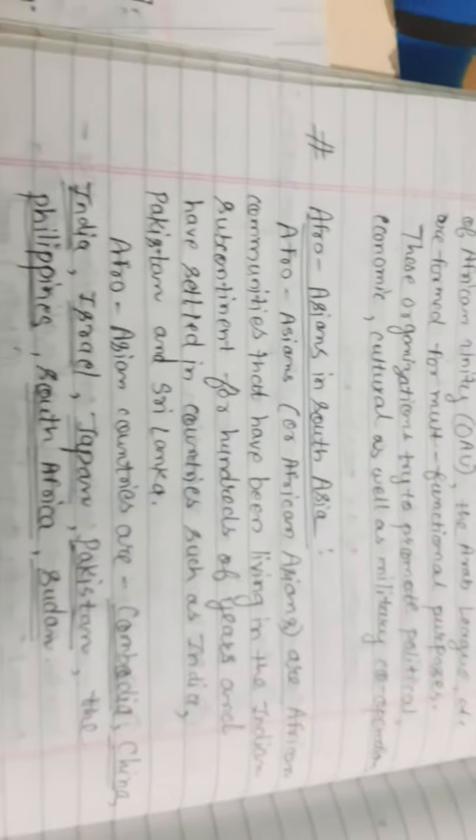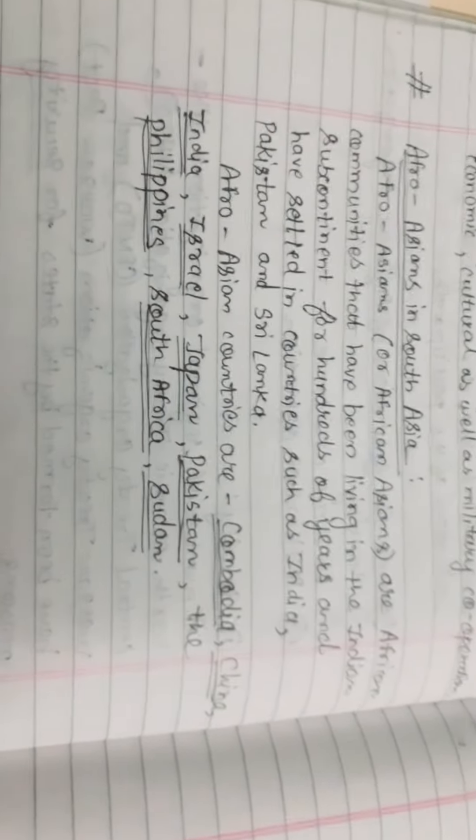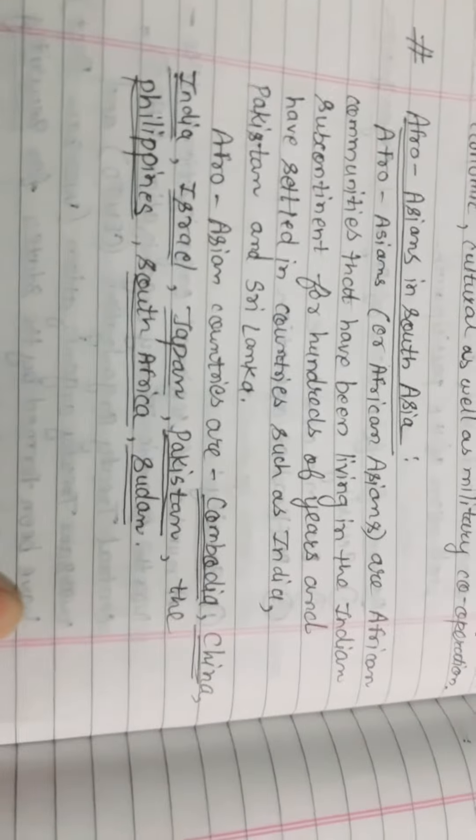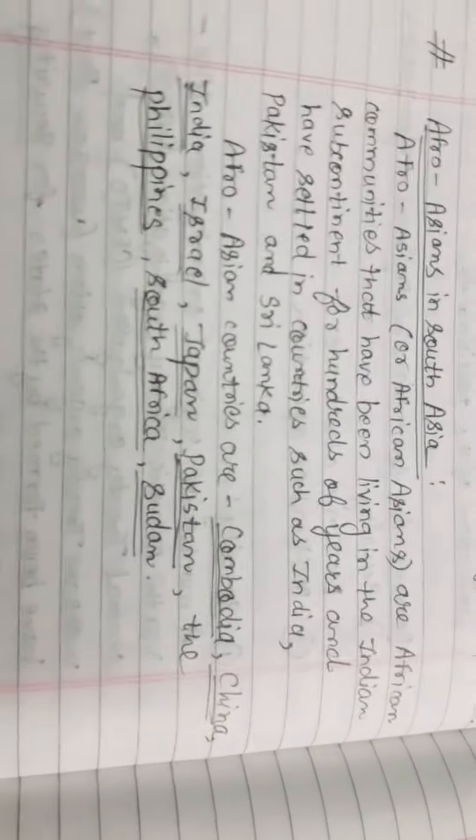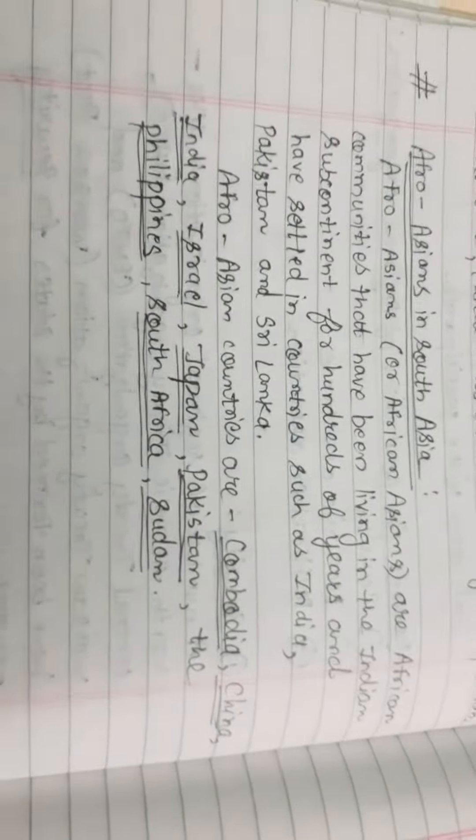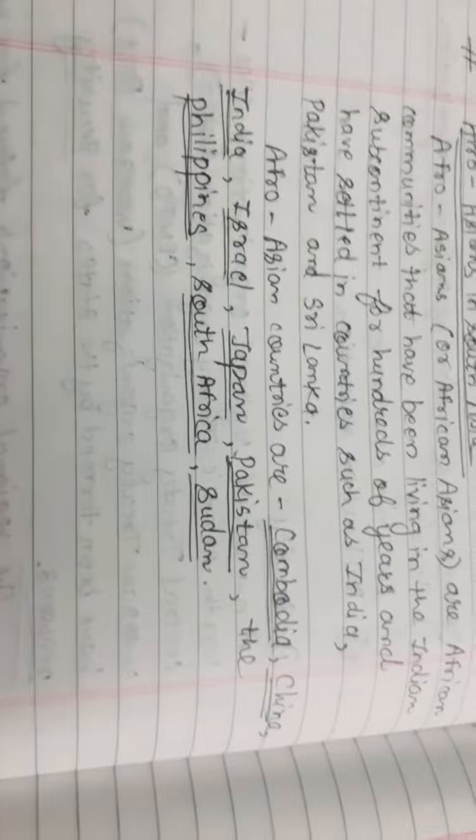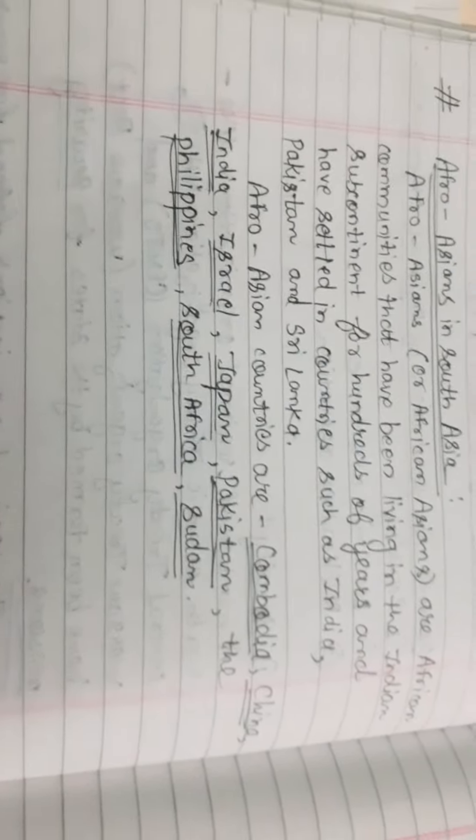Afro-Asians are African communities that have been living in the Indian subcontinent for hundreds of years and have settled in countries like India, Pakistan, and Sri Lanka. Afro-Asian countries include Cambodia, China, India, Israel, Japan, Pakistan, the Philippines, South Africa, and Sudan.